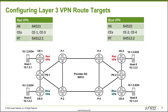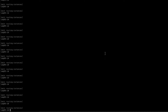We have overlapping prefixes between the red VPN and the blue VPN. The whole idea of an L3 VPN is that we can specify a route target to keep these prefixes separate, so different customers' traffic between the red VPN and blue VPN won't mix. We'll configure the route targets for each VPN. Let's jump to the CLI and get this going.